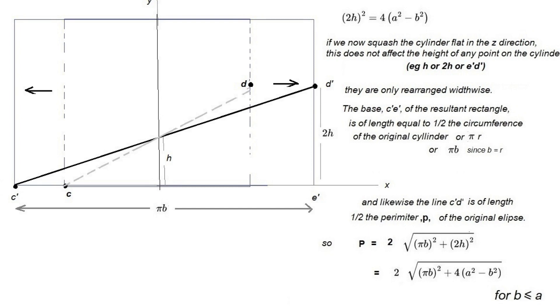And likewise the line c'd' is half the length of the perimeter of the original ellipse, and a simple expression for the perimeter of an ellipse is obtained.